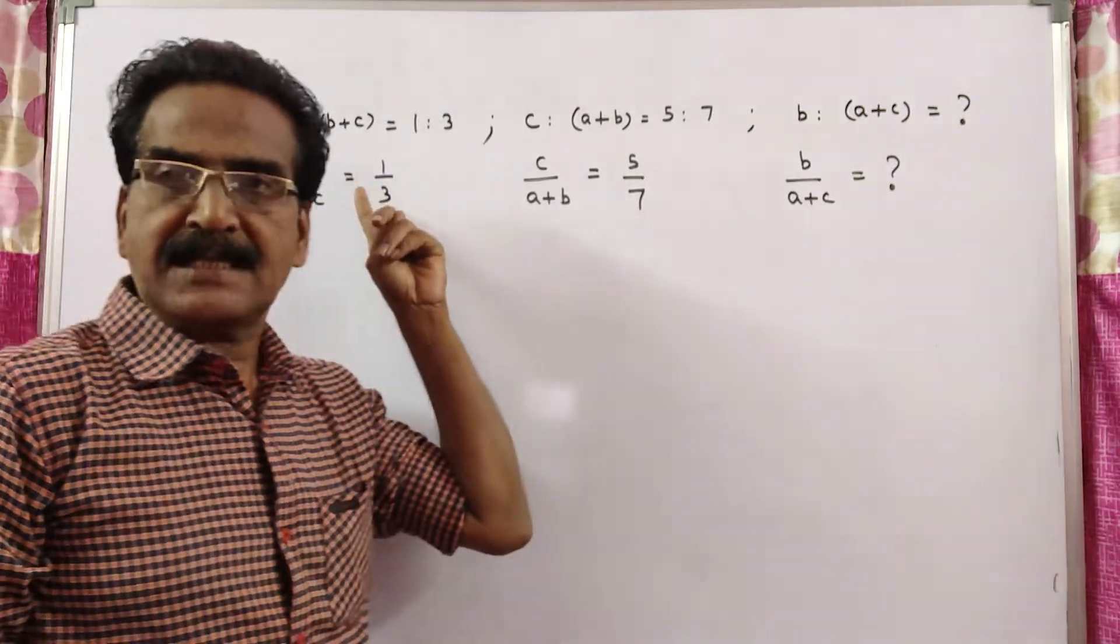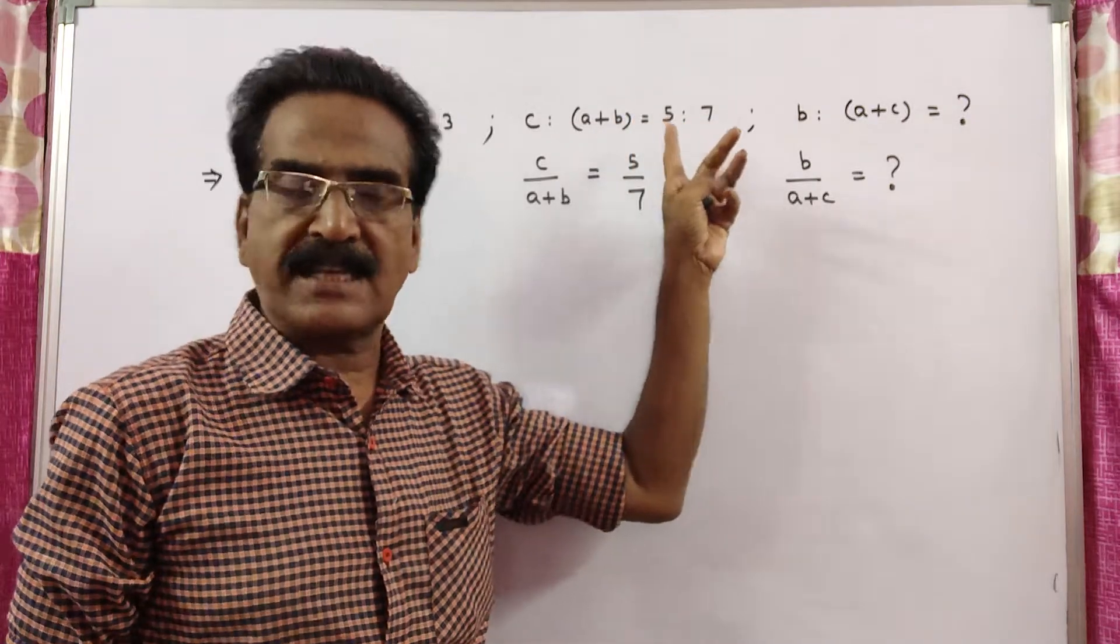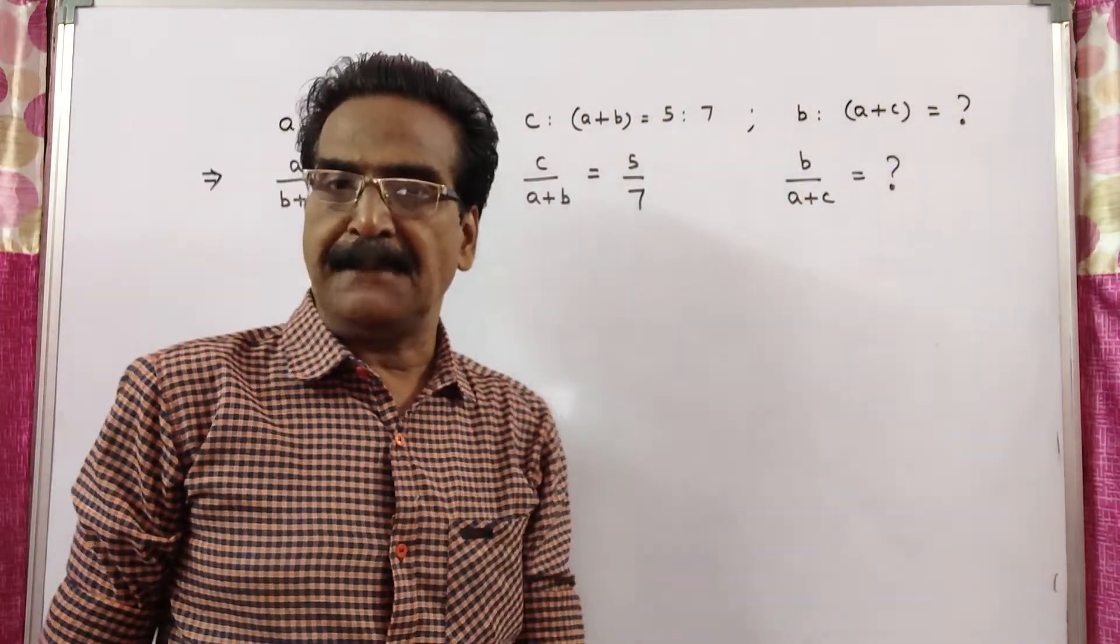See friends, a is to b plus c is equal to 1 is to 3, c is to a plus b is equal to 5 is to 7. What is b is to a plus c?